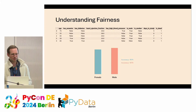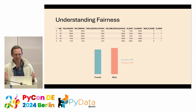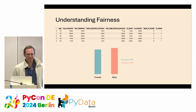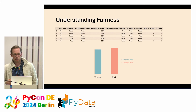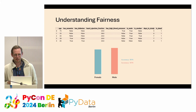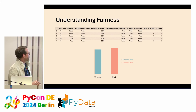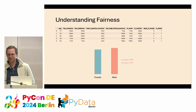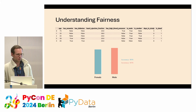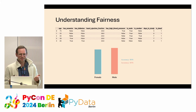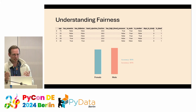What do I mean with fairness? I'll keep it pretty casual, not too academic. Basically, you want to make sure that your machine learning model works equally well for different groups that are relevant for your use case. For example, in a use case where you classify if a patient is susceptible to heart failure, you want the model to work equally well for younger people, older people, female, male, and so on.